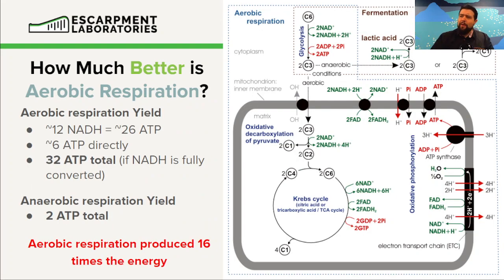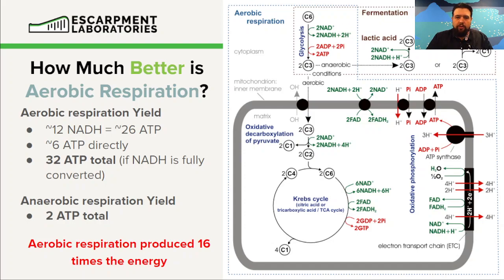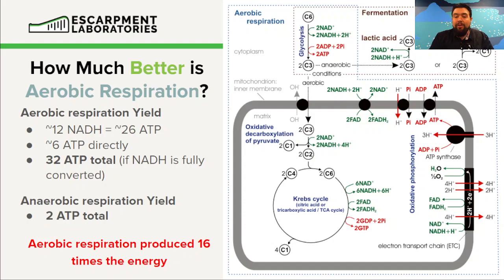We can look at this in a bit more detail. How much better is aerobic respiration? If we look at aerobic respiration from a yield standpoint — one molecule of glucose going inside the yeast cell — aerobic respiration yields roughly 12 NADH. There's also some FADH2 in there, and we're assuming those are the same. If we convert all this NADH into ATP, that equates to about 26 ATP. Additionally, six ATP are generated just through standard metabolism, yielding a net of 32 ATP if all the NADH is converted.